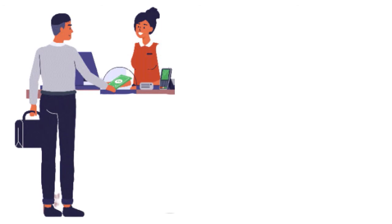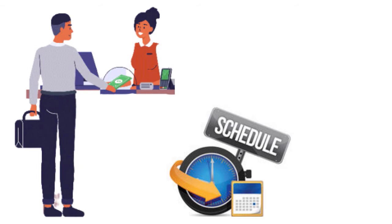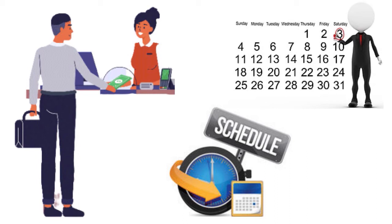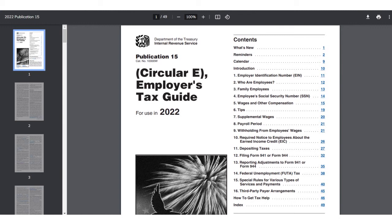All payroll taxes must be deposited with the government in a timely manner. The IRS sets tax deposit deadlines for employers, and those deadlines depend on the amount of deposit. Semi-weekly schedules apply to the largest employers, while monthly schedules are used by the majority of employers. Some payments may be made with either Form 941 or Form 944 depending on certain criteria. For further details, you can refer to pages 25–26 on depositing taxes in IRS Publication 15.